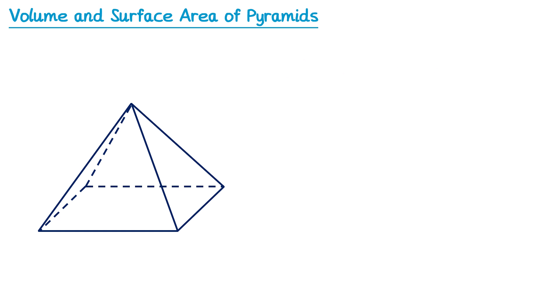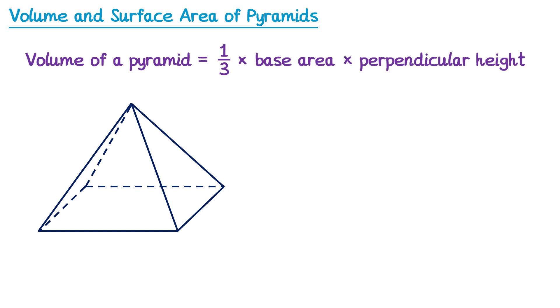The formula for the volume of a pyramid is one-third multiplied by the base area multiplied by the perpendicular height, where the base area is just the area of the base, and the perpendicular height is the vertical distance from the top of the pyramid all the way down to the base, so that it forms a right angle with the base. You shouldn't confuse the sloped edge as a height because it's not perpendicular — it's on a slope.